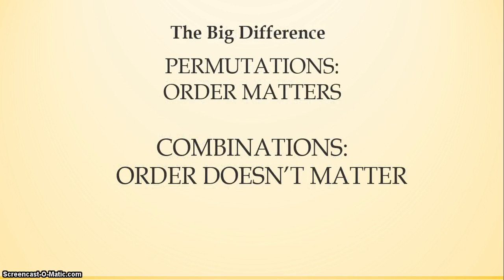Now, there really are two techniques: what's called a permutation or a combination. Each one has a specific formula. There are two formulas that can be used to determine the number of groups, sets, or lists you can make, depending on whether or not the order in which you select items from the larger group matters.